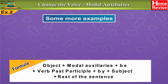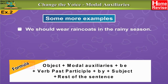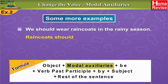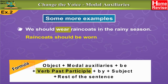Let's take a few more examples to understand this better. 'We should wear raincoats in the rainy season.' First, identify the object. What should we wear? — Raincoat. So 'raincoat' is the object. Now apply the formula. The sentence begins with the object 'raincoat,' followed by the modal auxiliary 'should,' plus 'be,' and the past participle of 'wear' is 'worn.'